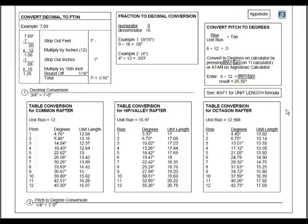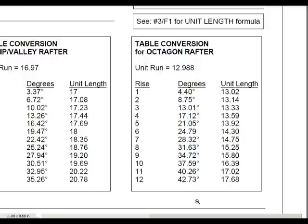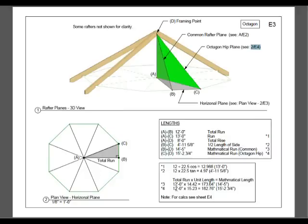And here's your table conversion for your octagon rafter. Unit run we said was 12.988. For an 8 rise, your unit length will be 15.25. Close enough. Once we know your unit length, we multiply that by your total run of 12. And the mathematical length will be 15 feet 2.75 inches. So that's between C and D.